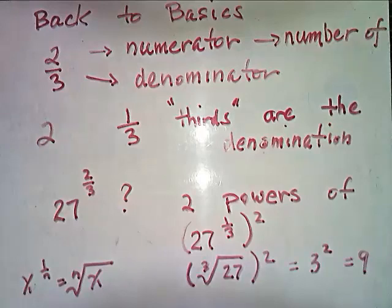The third root of 27 is the same as the cube root of 27. The cube root of 27 is 3, and we want to square 3. 3 squared, of course, is 9.